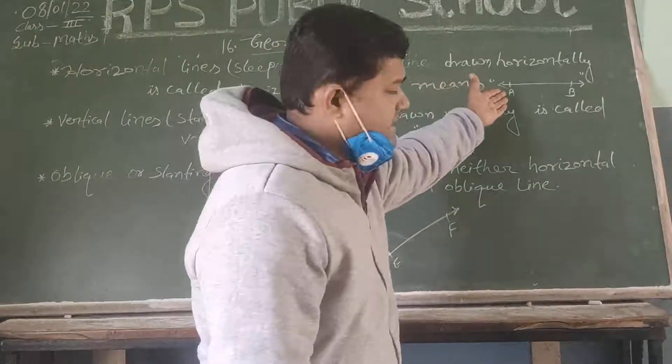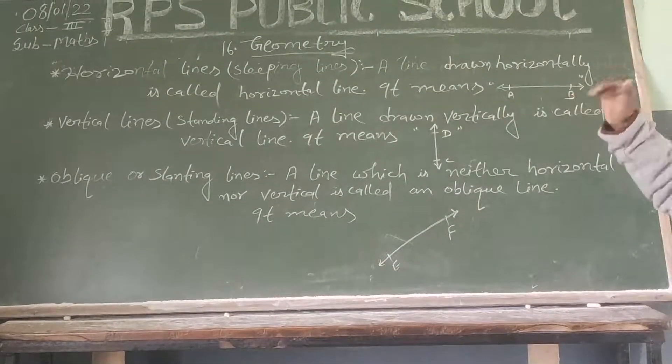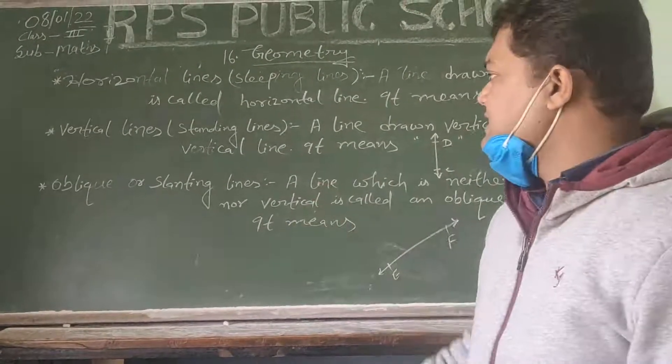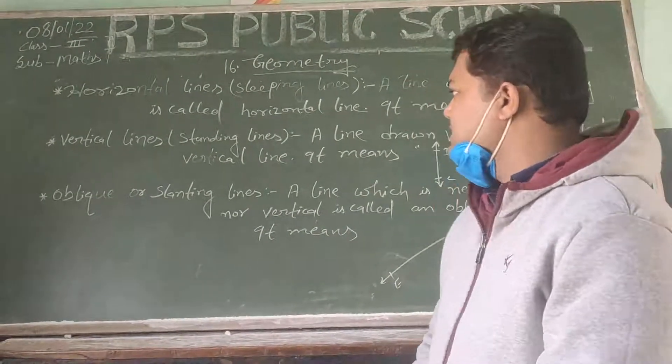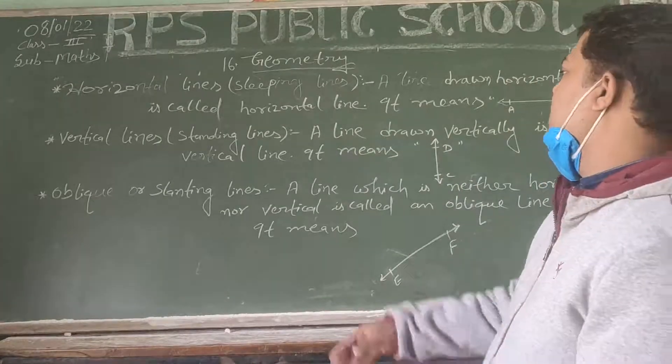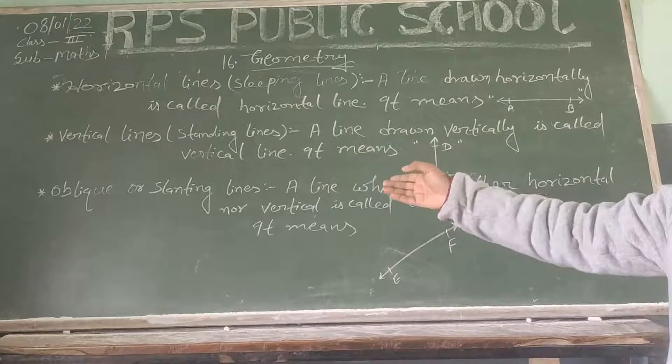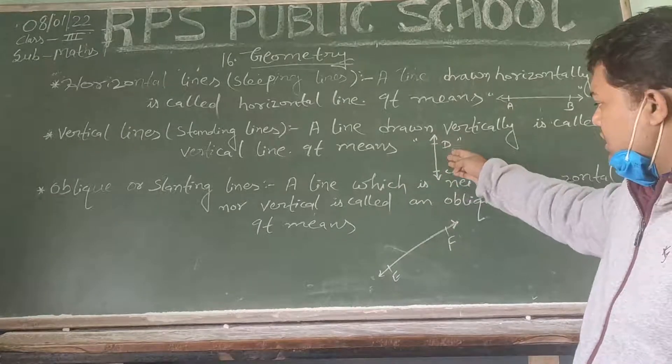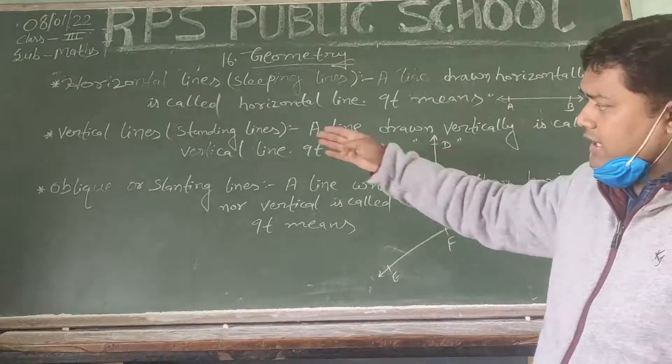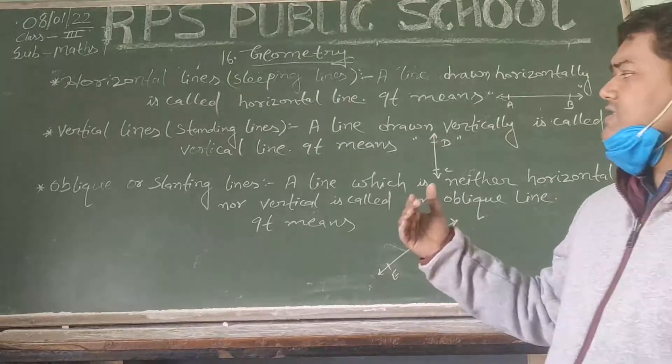Vertical lines, standing lines. Vertical lines are horizontal lines. This is the line. It's called vertical lines. This line is horizontal lines, this line is vertical lines.